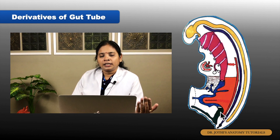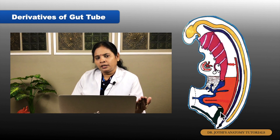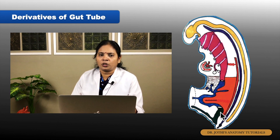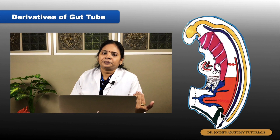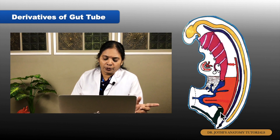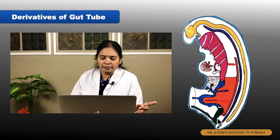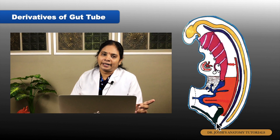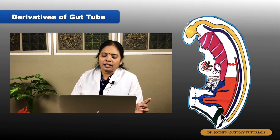From the hindgut, the derivatives include: the remaining left one-third of the transverse colon, descending colon, sigmoid colon, rectum, and the upper portion of the anal canal.